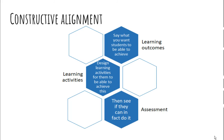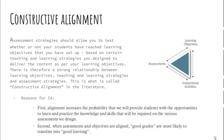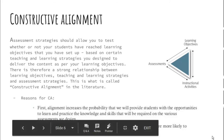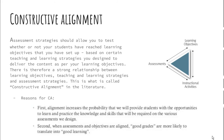If you look at constructive alignment in terms of a triangle, your learning objectives, your assessment, and your instructional activities all feed into each other — it's all part of the same thing. Based on certain teaching and learning strategies, your assessment strategies should be based on your teaching and learning strategies. There's a strong relationship between the learning objectives, teaching and learning strategies, and assessment strategies. This is what constructive alignment is. Constructive alignment increases the probability that you will provide students with the opportunities to learn and practice the knowledge and skills required.